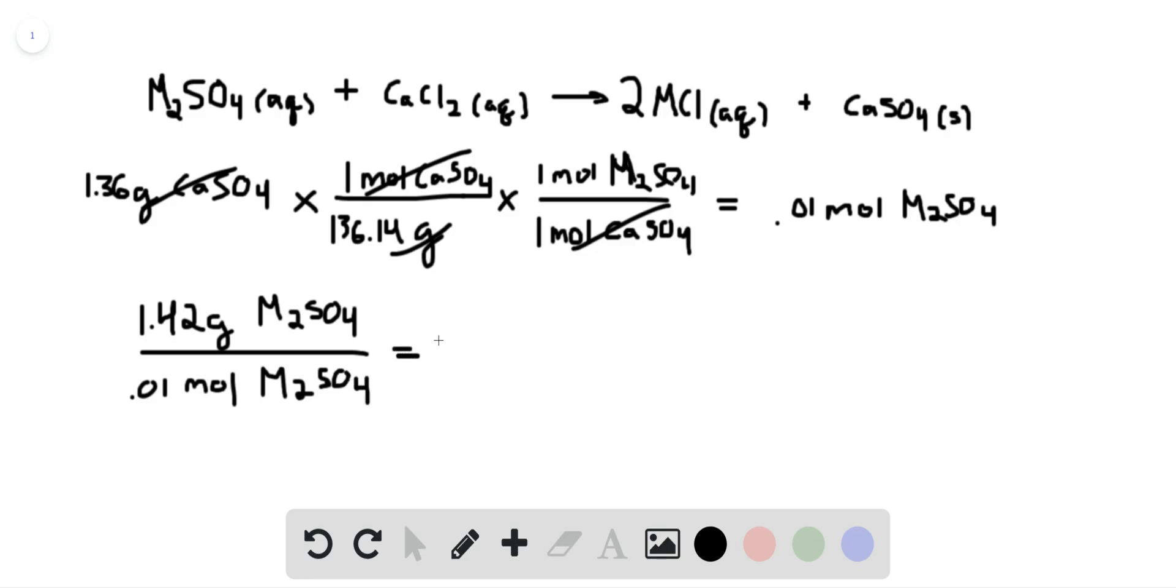And if you do this, you would get an answer of 142 grams per mole. This is the molar mass of M2SO4. And we know what the molar mass of sulfate is.